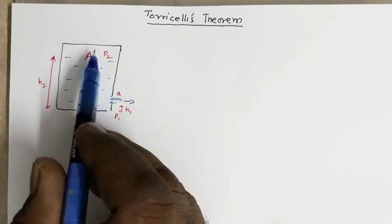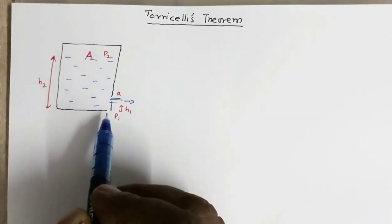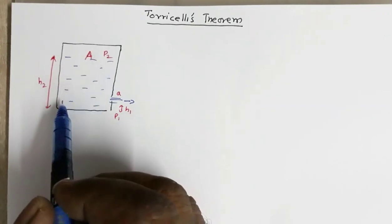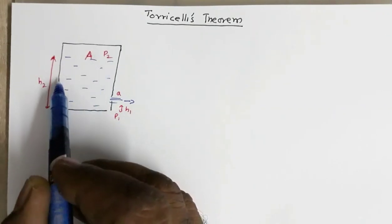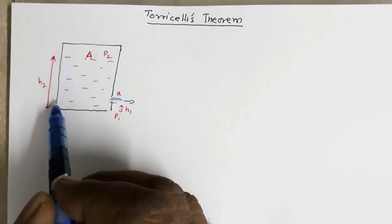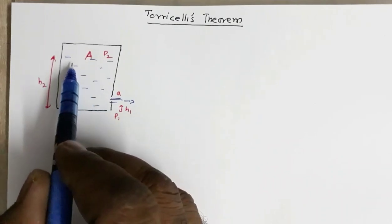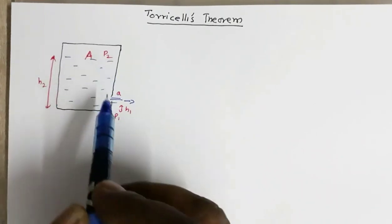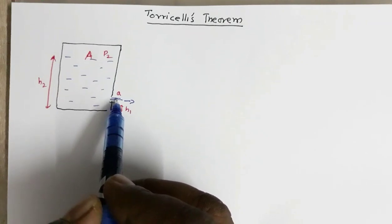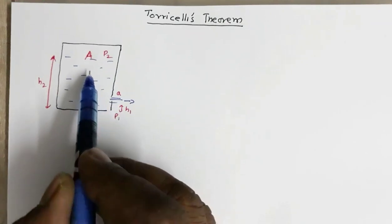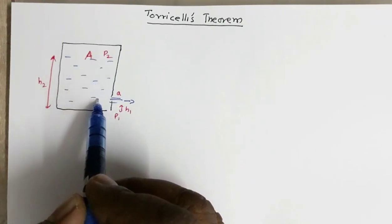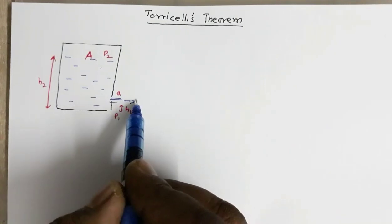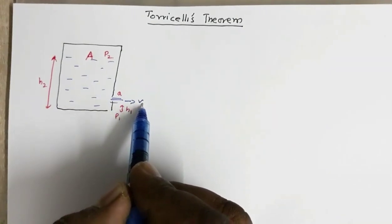Suppose we have a closed tank containing water or any liquid. The level of liquid is H2 and the area of the tank is capital A. The area of the opening is small a. This water is coming out through this opening with velocity v1.